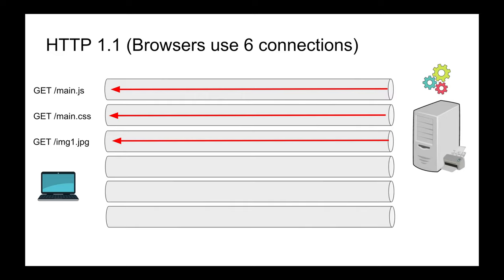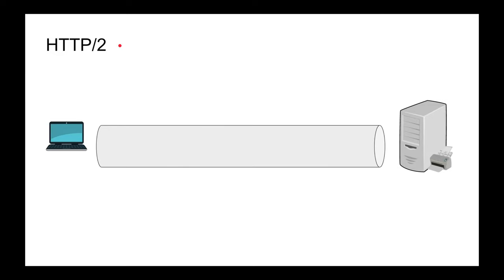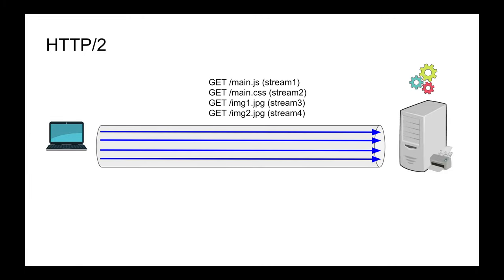So how does HTTP/2 work? From a client perspective, you still make GET and POST requests, but over a single, very efficient TCP socket. The client shoves as many requests as you make into the pipe at the same time — that's called multiplexing. The first question is: how does the server know which request is which when it receives multiple requests at once?